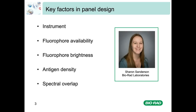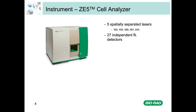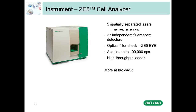The agenda for this webinar will be instrument, fluorophore availability, fluorophore brightness, antigen density and spectral overlap — the cornerstones of panel design. Before doing anything else, it's fundamental to know which flow cytometer you have available and what configuration: lasers, filters, detectors. It is simply a waste of time to design a panel if you cannot run it later, so always check the instrument first.